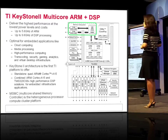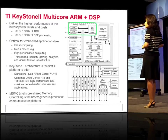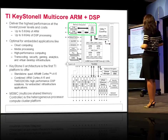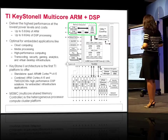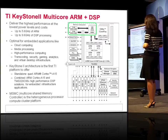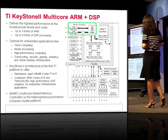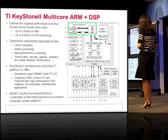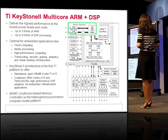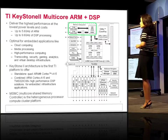We also enable eight DSPs on the chip, each running at 1.3 GHz — though the marketing slide lowers it slightly to 1.2. Because the frequencies differ, for MISMIC to support both, one of them has to have an asynchronous bridge, which I'll talk about. This platform is optimal for embedded applications like cloud computing, media processing, high-performance compute, and transcoding — all enabled by having two different processors on the chip.